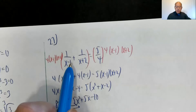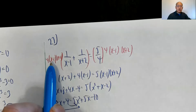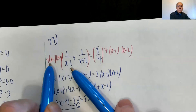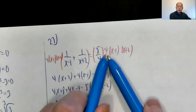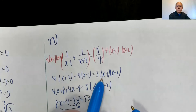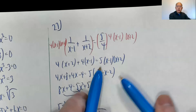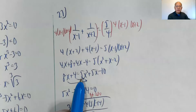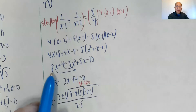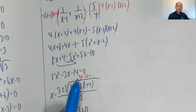Problem twenty-seven is a little more complicated. Clear the fractions by multiplying both sides by the common denominator, which is four times x minus one times x plus two. Multiplying gives four times x plus two, plus four times x minus one on one side, and five times x minus one times x plus two on the other. Distributing gives four x plus eight plus four x minus four equals five x squared plus five x minus ten. Throwing terms to one side gives five x squared minus three x minus fourteen equals zero.